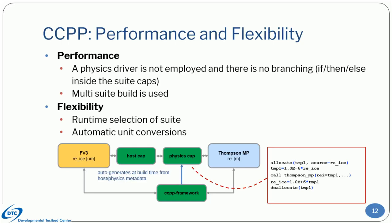The CCPP serves a dual purpose. On one hand, it provides the necessary performance for operations, with fast execution and low memory footprint. One aspect enhancing performance is that there is no code branching inside the auto-generated suite caps, making the code very efficient. Instead, CCPP uses a multi-suite static build that allows compiling multiple suites into the same executable.